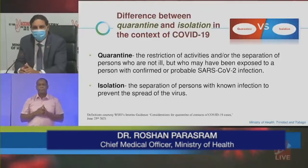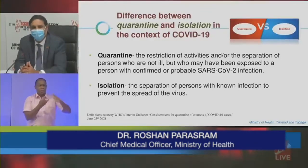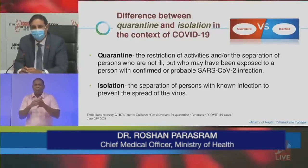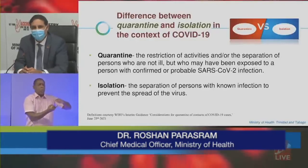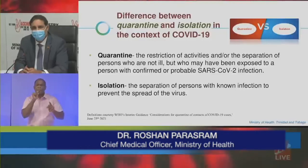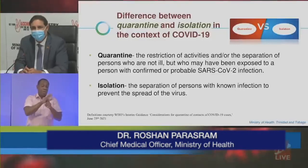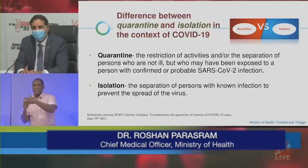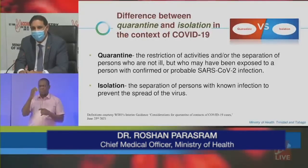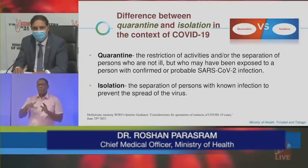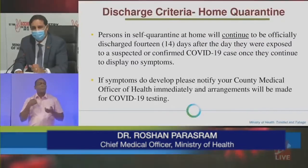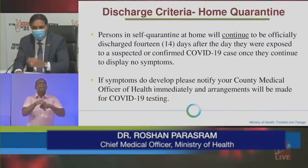Just to underscore: what is the difference between quarantine and isolation? Quarantine is the restriction of activities and/or the separation of persons who are not ill but who may have been exposed to a person with confirmed or probable SARS-CoV-2 infection. Isolation, on the other hand, is the separation of persons with known infection to prevent the spread of the virus.